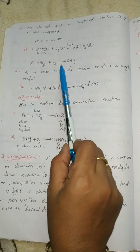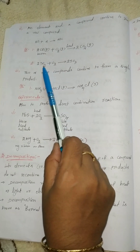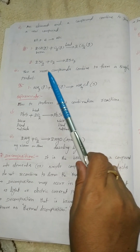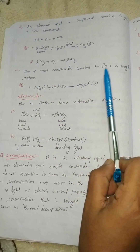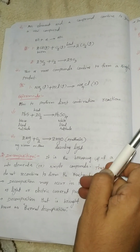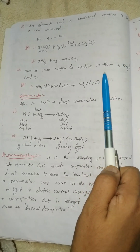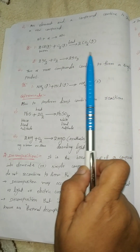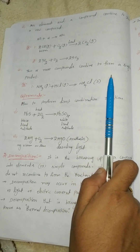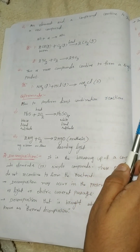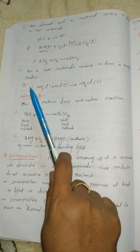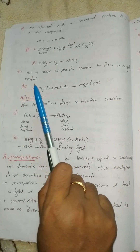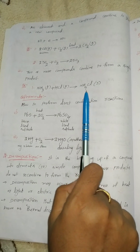Next, sulfur dioxide plus oxygen gives SO3 — this is a new compound. Also, 2 or more compounds can combine to form a single product; this is the reverse reaction of decomposition. Decomposition means one compound decomposes into 2 or 3 compounds, whereas here 2 or more compounds combine to form only one product. For example, NH3 plus HCl gives NH4Cl.